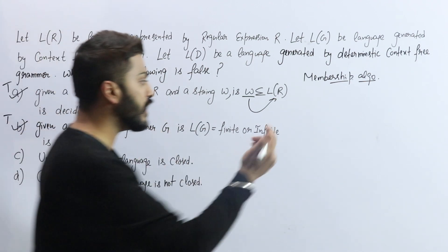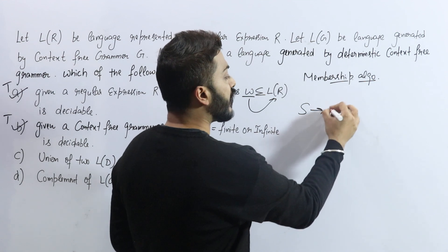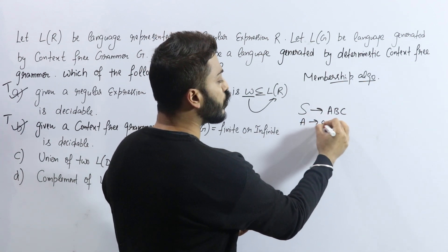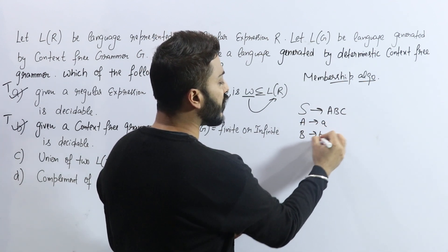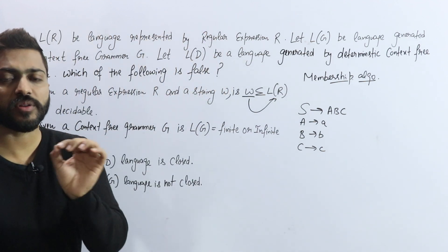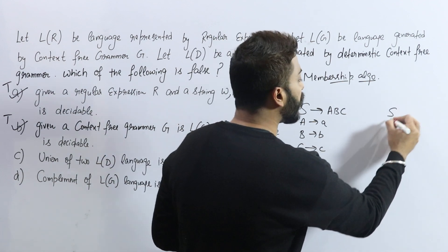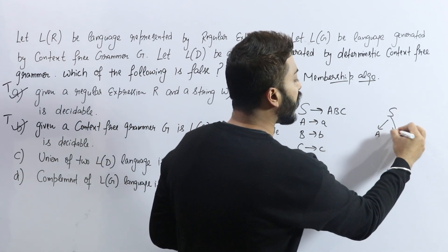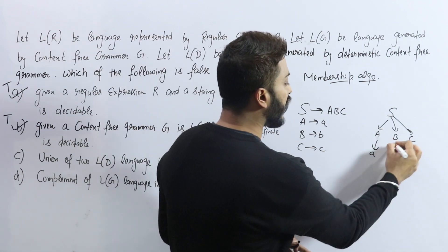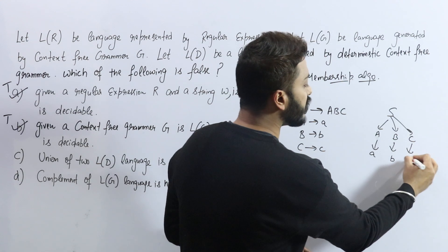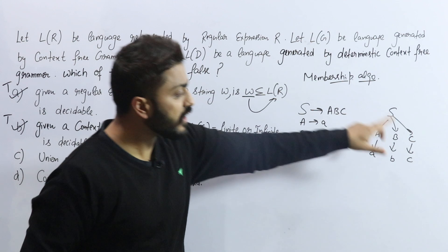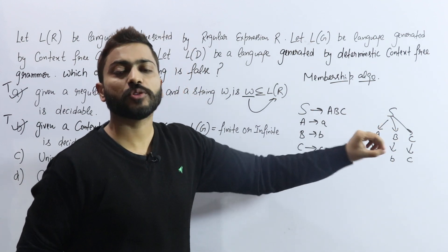Let's see how we normally check this. If we talk about a simple grammar — S goes to ABC, A goes to terminal a, B goes to terminal b, C goes to terminal c — we use a graph theory algorithm here. If we make a graph, S has three variables A, B, and C. A goes to a, B goes to b, C goes to c. If we make the graph and there are loops present, you can say the language is infinite. So we use a graph theory-based algorithm, and since an algorithm exists, this is decidable.